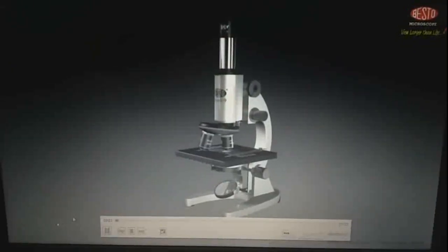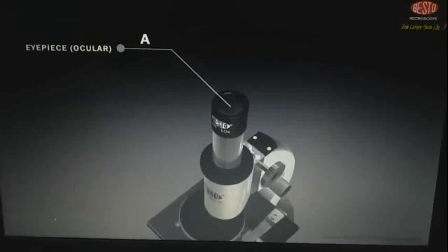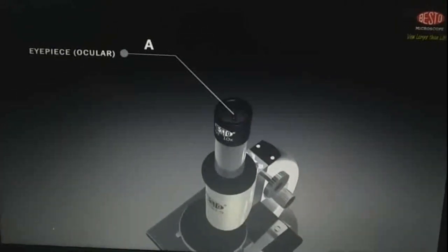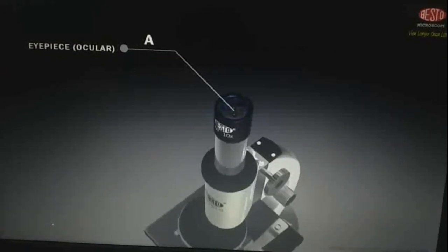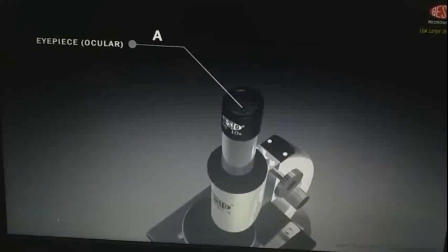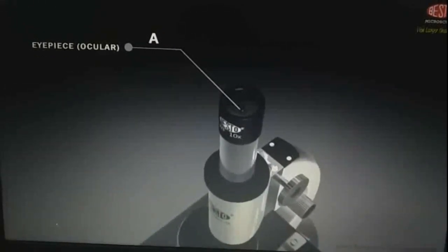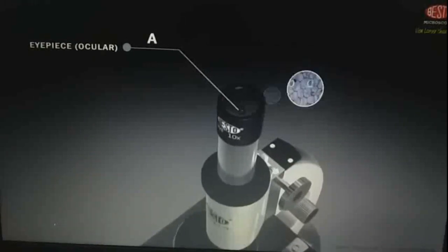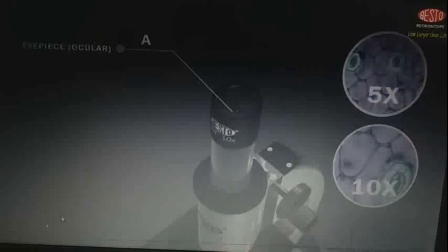Microscope and its parts. A, eyepiece. It is the part of the microscope close to your eyes through which you look. It contains lens which makes the image produced by objective lenses larger. An eyepiece may be labeled with its magnification or power, 5x or 10x, meaning it enlarges 5 times or 10 times.